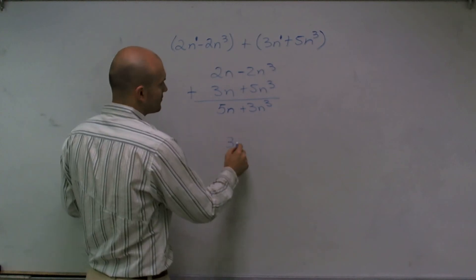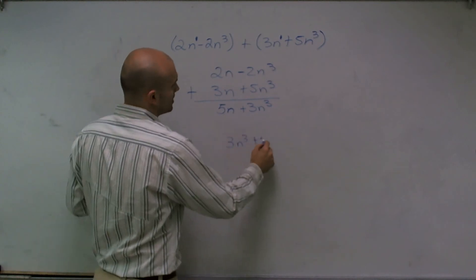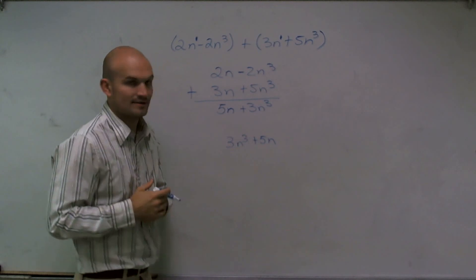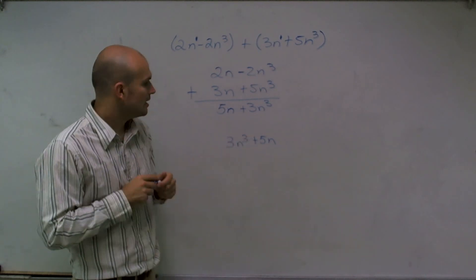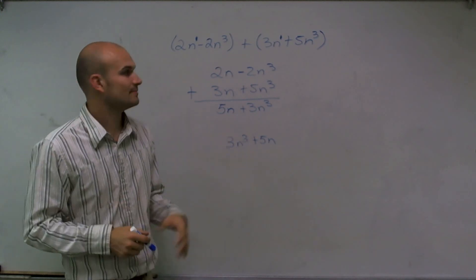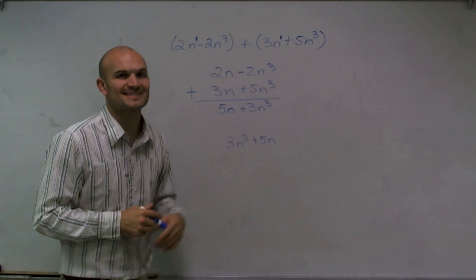So I'm going to write 3n cubed plus 5n. It's just helpful to write that first term with our highest exponent. And that's how you add two polynomials. Thanks.